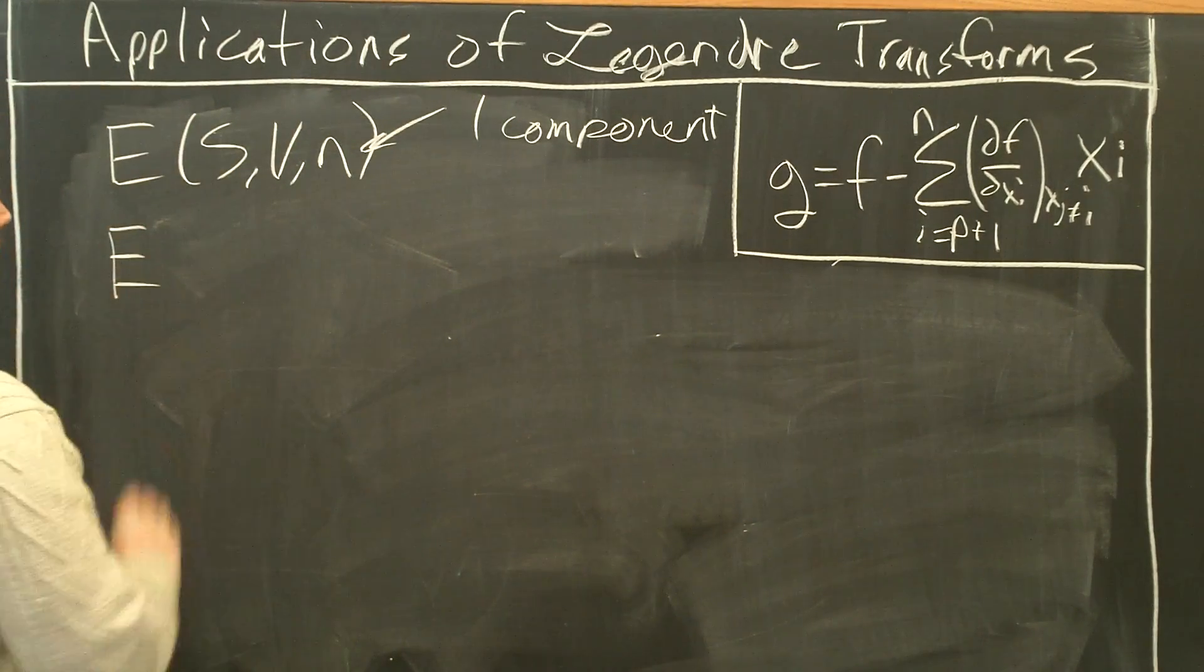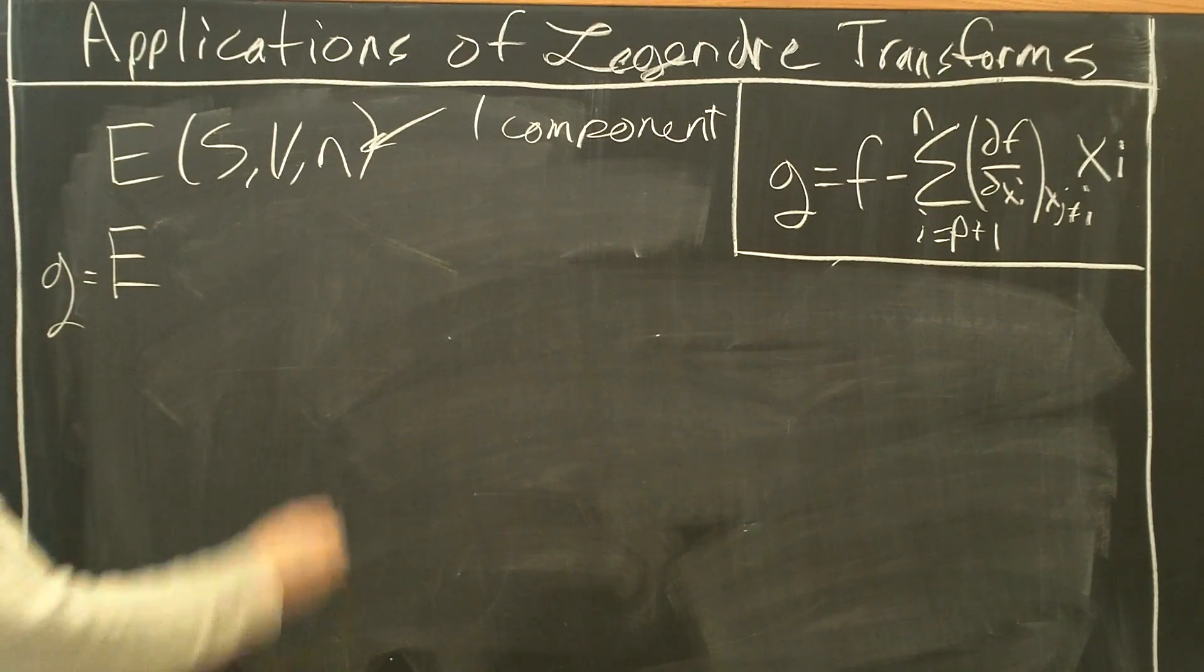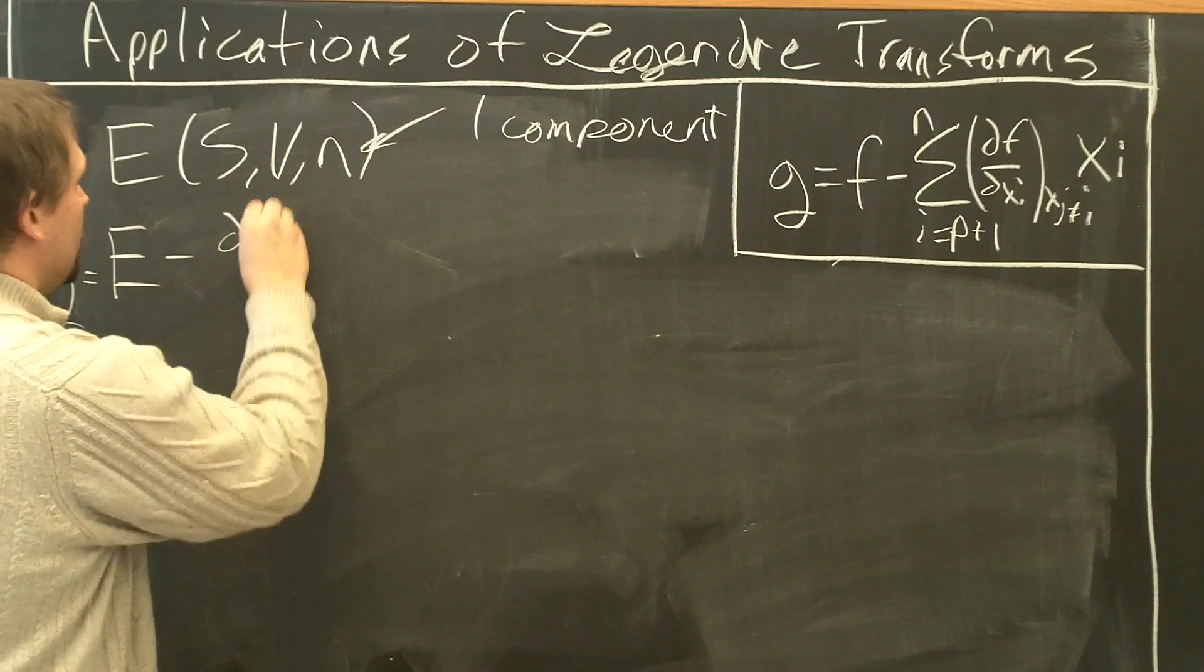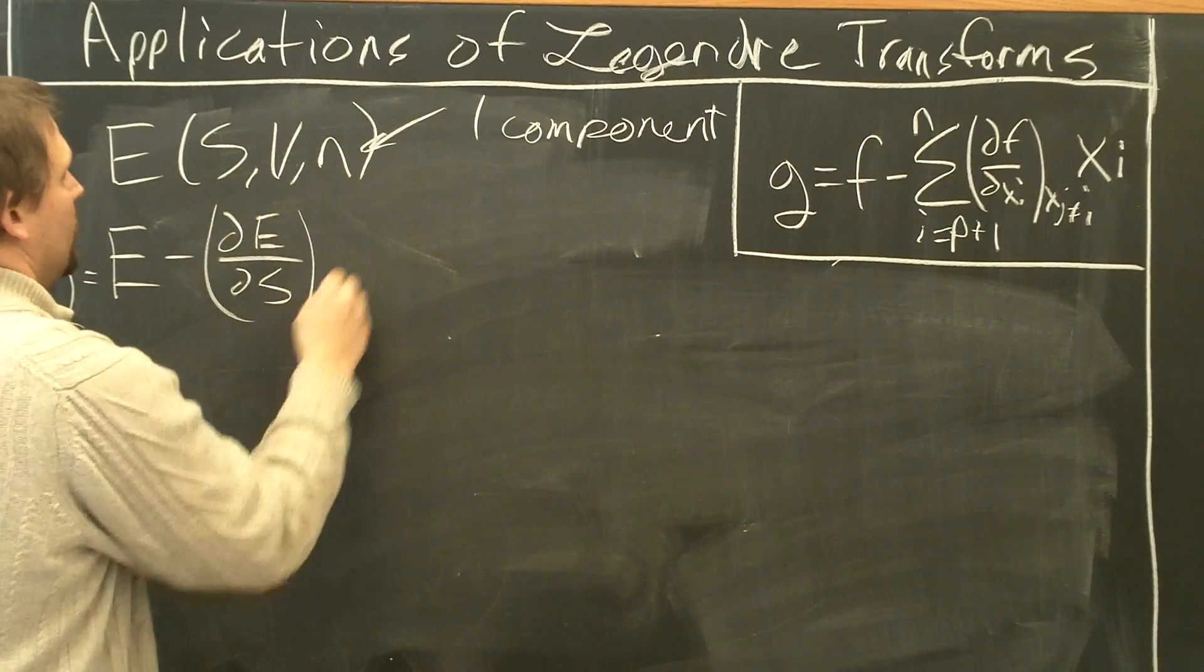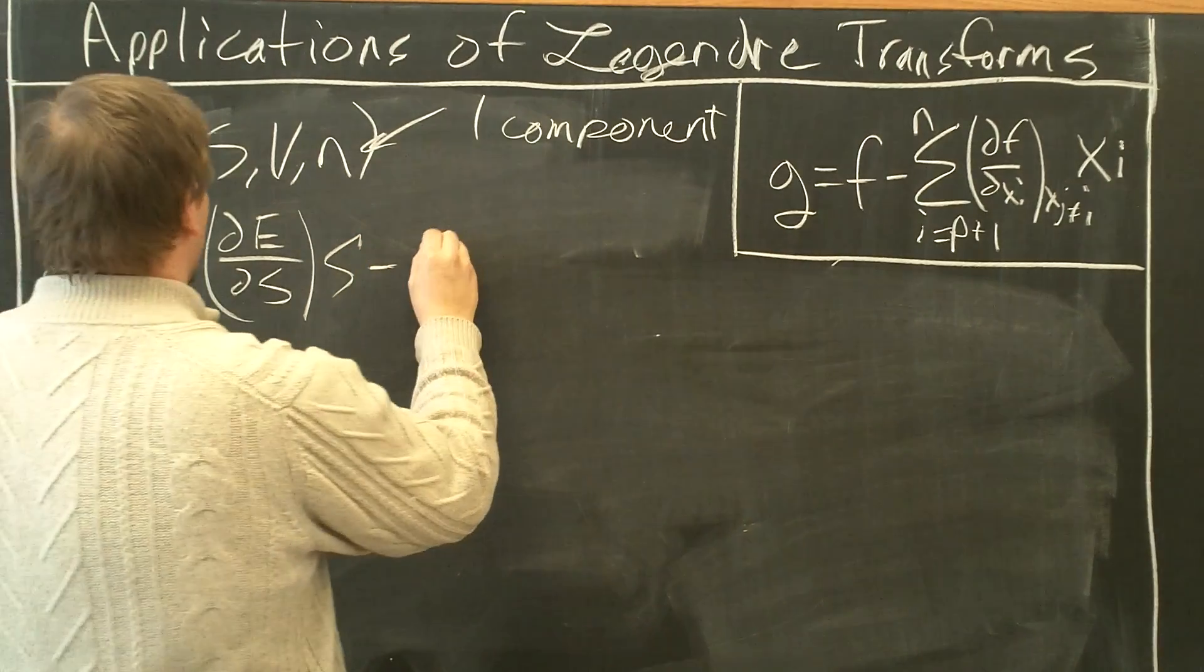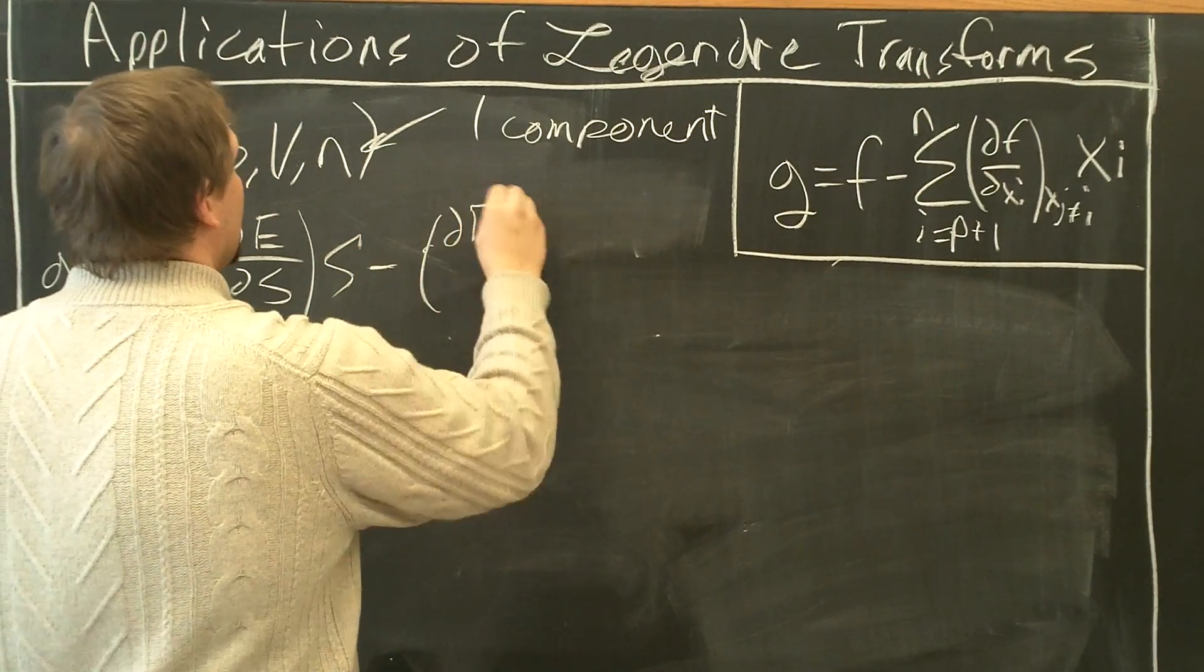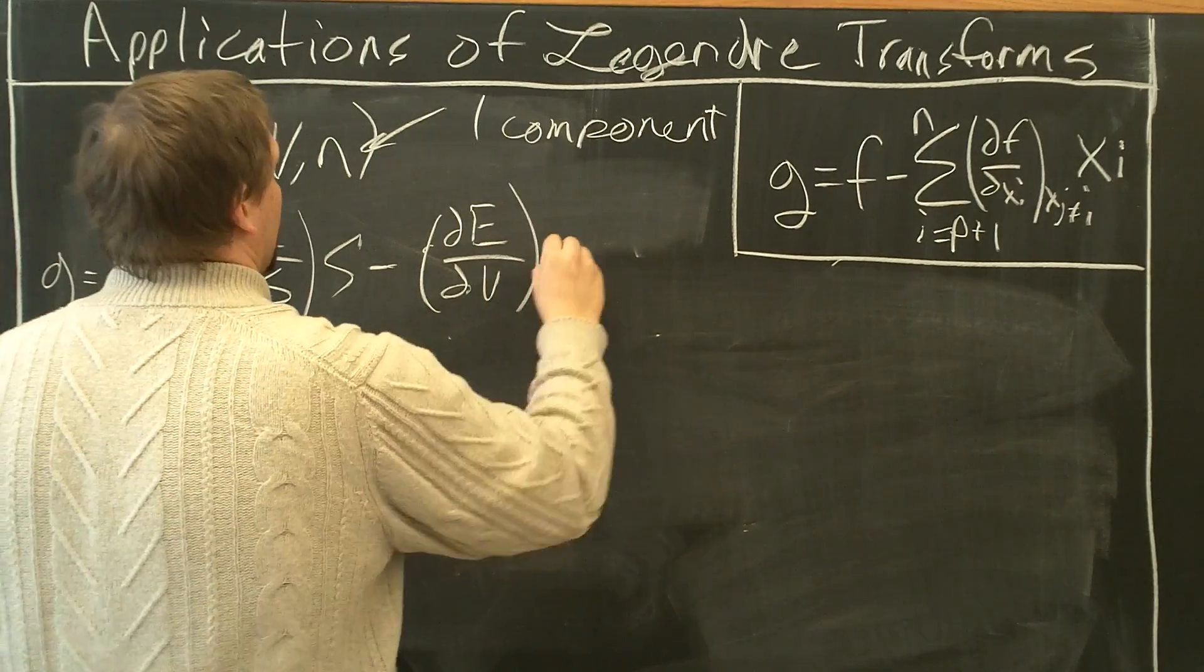So E, let's call this a new function, little g, equals E minus partial E partial S times S, minus partial E partial V times V.